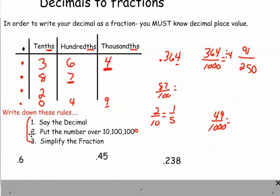All right, hopefully you've written down those rules. So let's look at this. It says, say the decimal, six, and that's in the tenths place. So that's six tenths. Now I need to simplify it. I can divide them both by two. So if I divide by two, I get three-fifths.